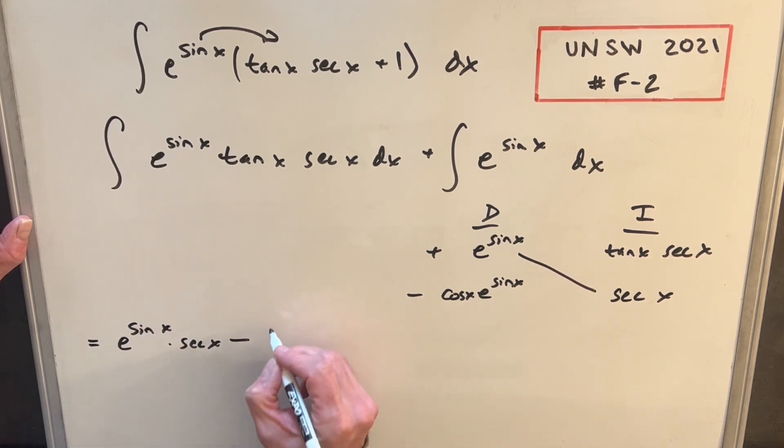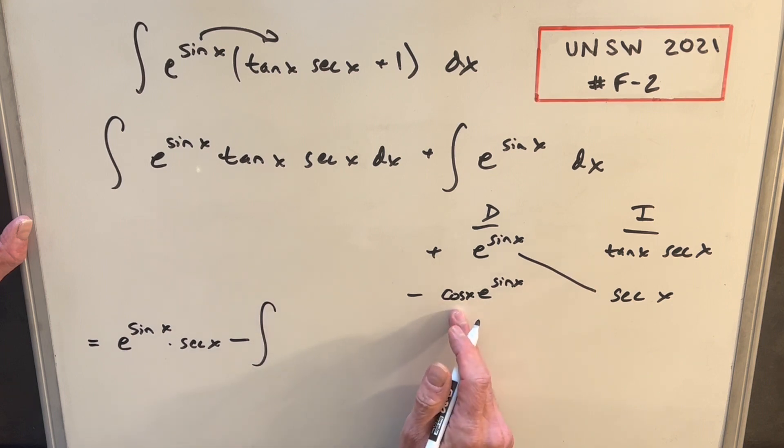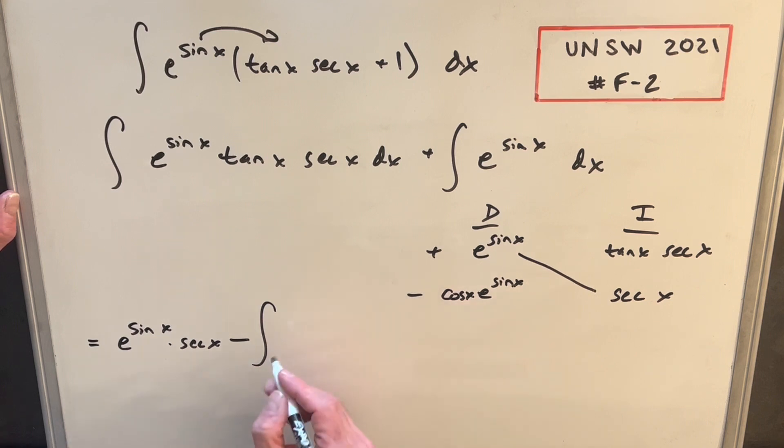Then we're going to have this integral here. So we're going to be subtracting, but cosine x times secant x is just one. The secant x is one over cosine x, so those terms cancel, and we just have the integral of e sine x dx.